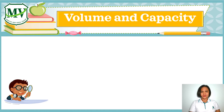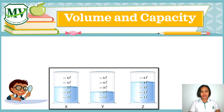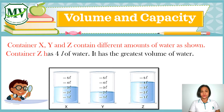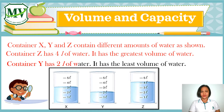Here is another example. We have three containers, each with a capacity of 5 liters. But containers X, Y, and Z contain different amounts of water. Container Z has 4 liters of water — it has the greatest volume of water. Container Y has 2 liters of water — it has the least volume of water.